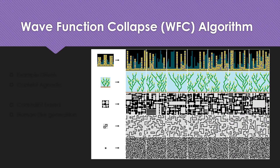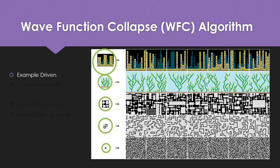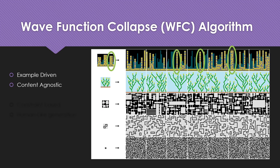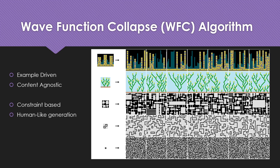In this image, we can see that wave function collapse accepts an input and generates outputs that follow similar rules as the input — this is an example-driven algorithm. The examples are clearly different from each other in terms of color and size choices, so the algorithm is content-agnostic. It uses constraints to solve the patterns it observes in the input, making it constraint-based, and it follows an iterative, almost human-like generation process.